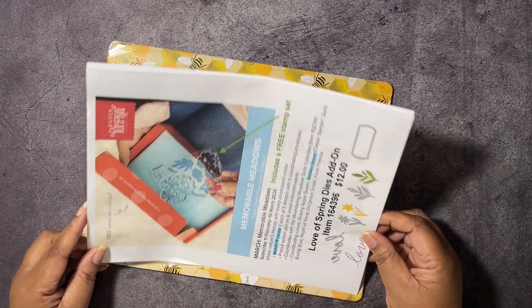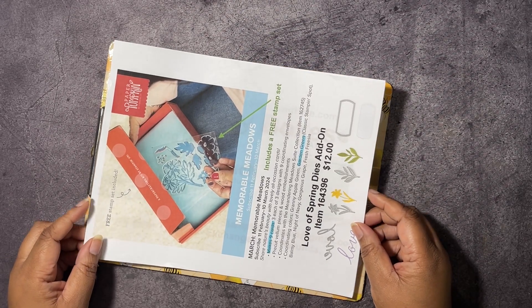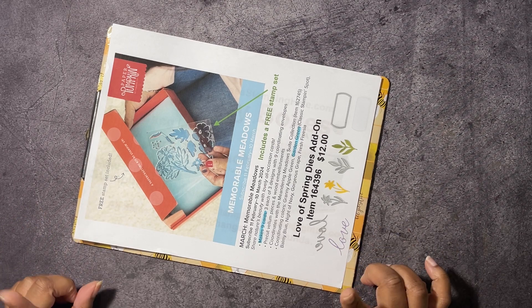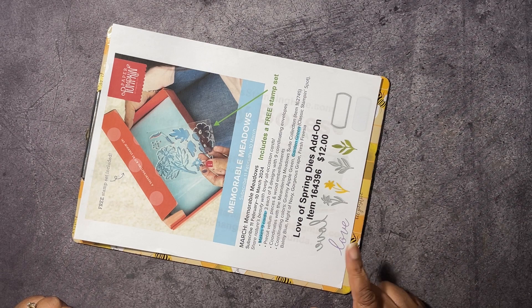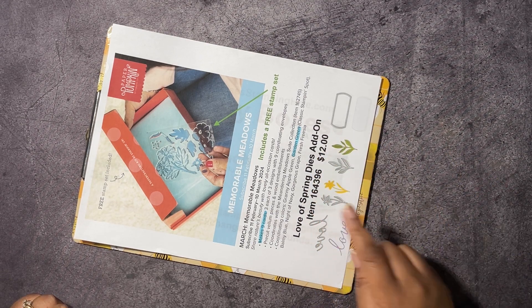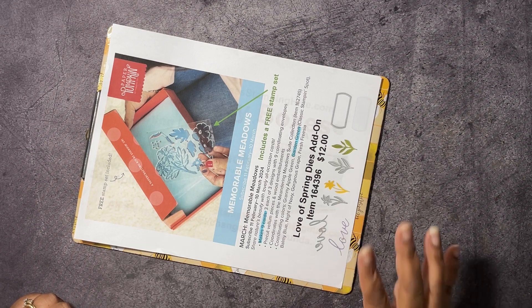We have our March Paper Pumpkin kit, Memorable Meadows. It includes a free stamp set, it makes nine cards, and the garden green is this classic Stampin' Up. If you're a Paper Pumpkin subscriber you can purchase the Love of Spring dies add-on for $12, item number 164396. These dies coordinate with January, February, and March Paper Pumpkin kits.